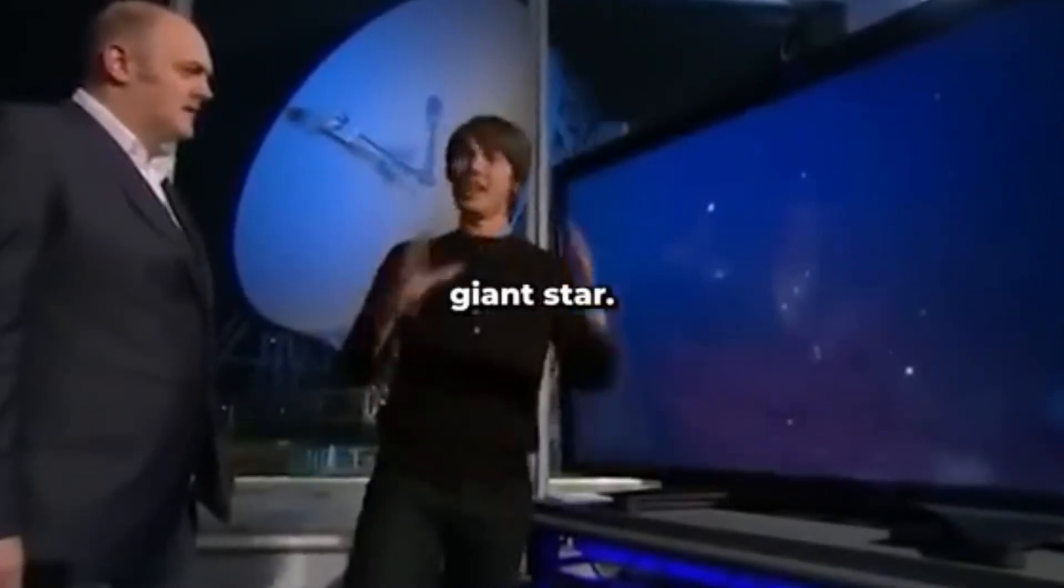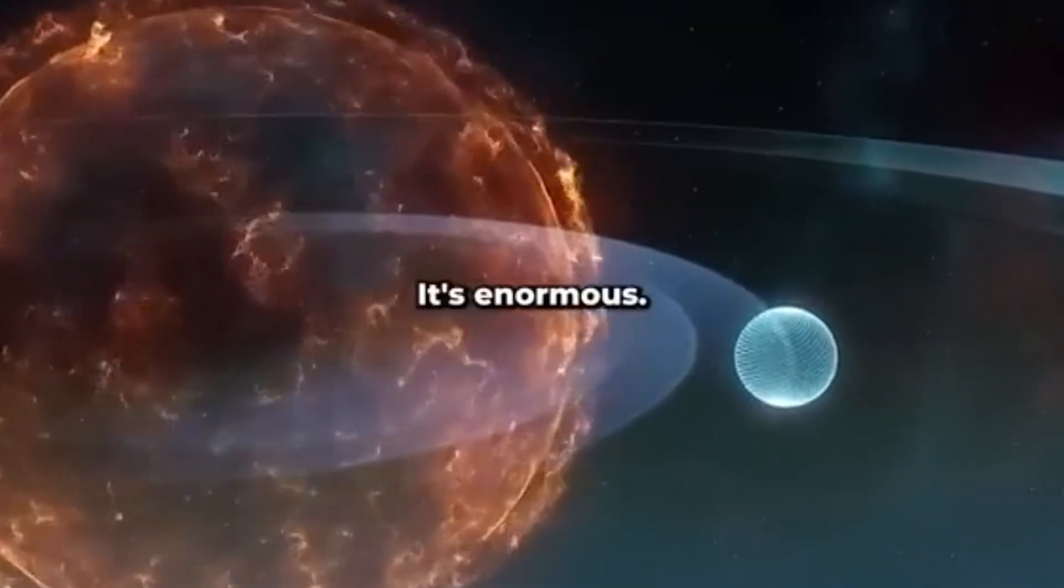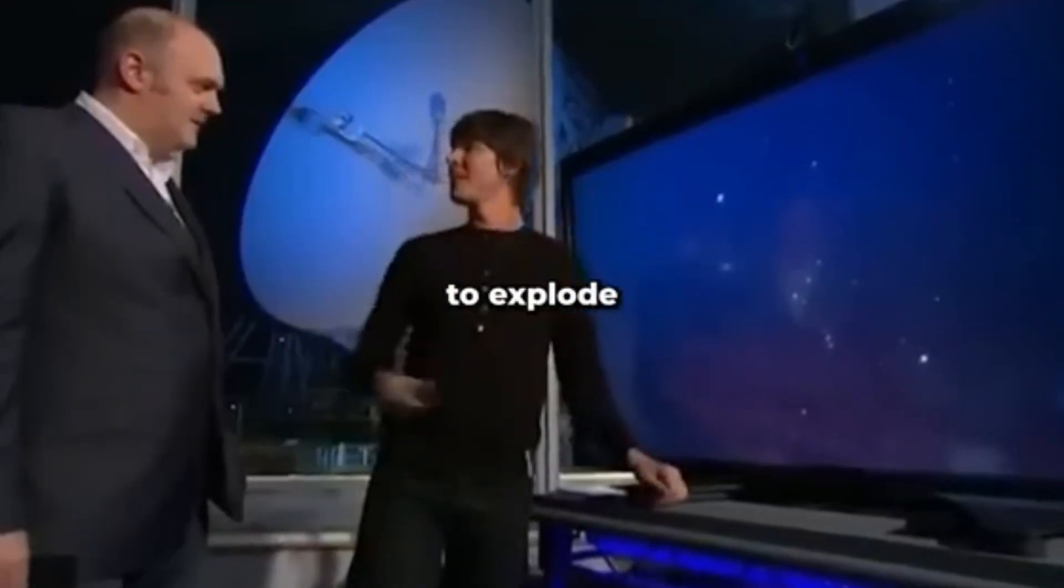Betelgeuse, or Betelgeuse, is a red giant star. If you put it where the sun is, it would extend out to the orbit of Jupiter. It's enormous, very unstable, and about to explode.